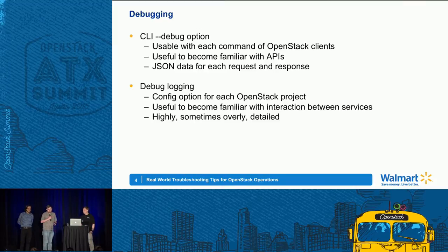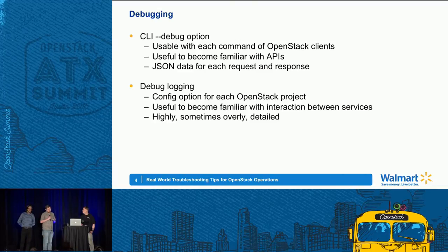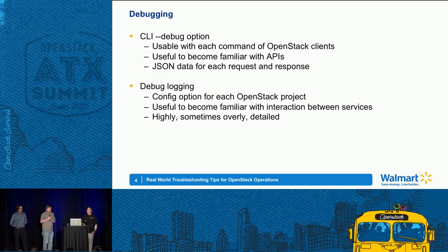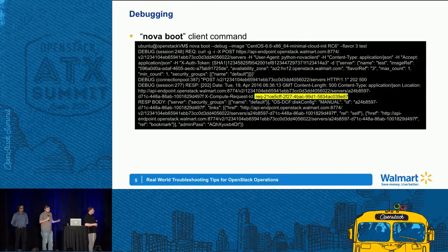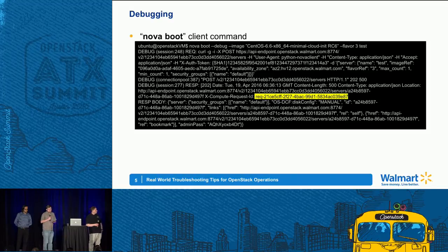Really useful for seeing what's actually happening — which API, especially when starting out and learning how OpenStack works and how the RESTful endpoints are hit. And also, every service has a debug option in its config. Some of the services will be quiet 90% of the time. Then you turn on debug, and it's a constant flood of information that's really overwhelming, but it has that one critical piece of information that really tells you what happened, what went wrong. Here's just an example of a Nova boot command — extremely basic with the Nova CLI.